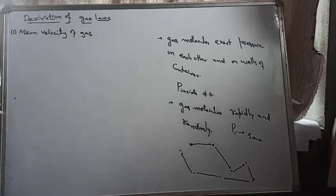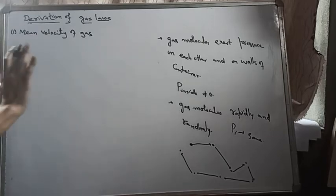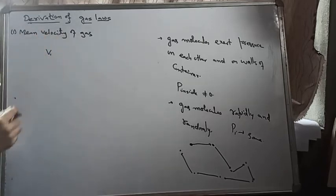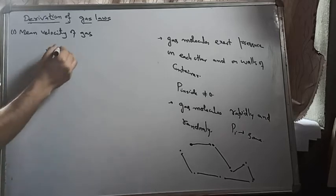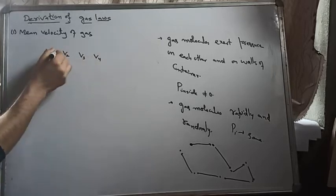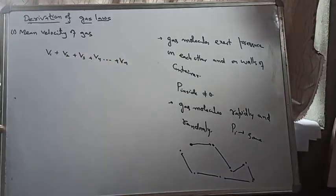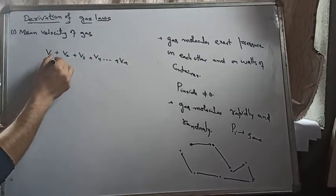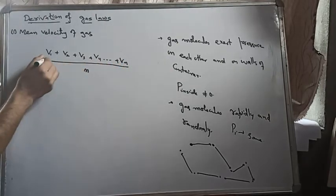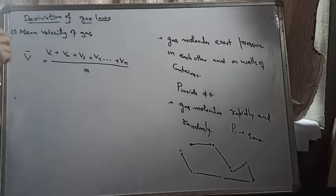The mean velocity of gas is calculated by taking all the velocities — V1 for the first molecule, V2 for the second, V3 for the third, and so on — adding them all and dividing by the number of molecules. So the mean velocity is the arithmetic mean of all the molecular velocities.